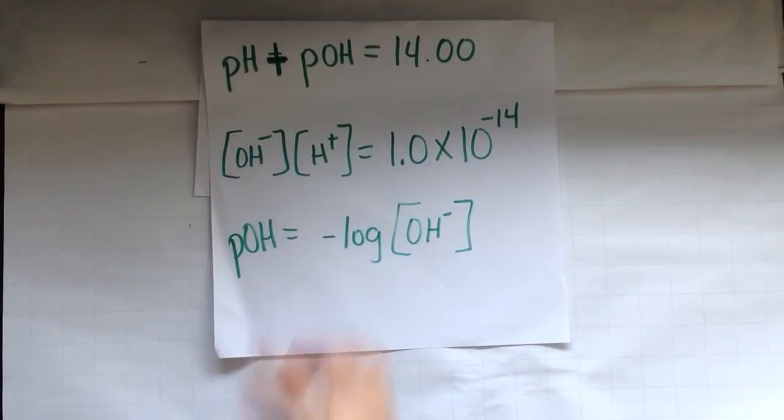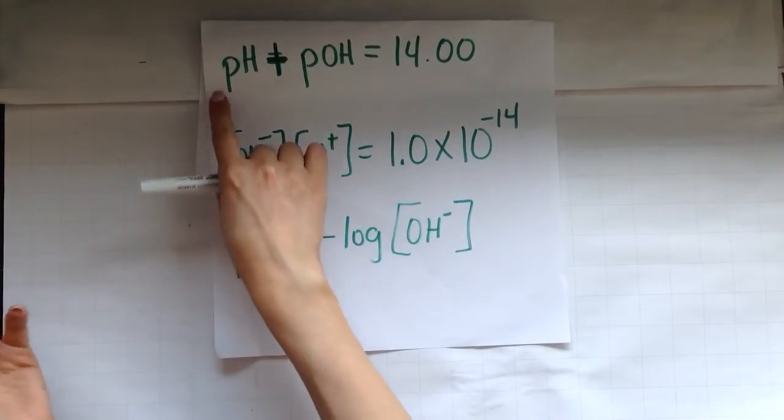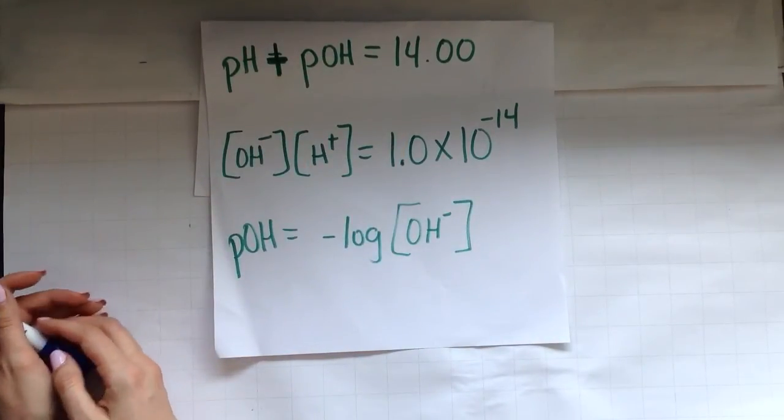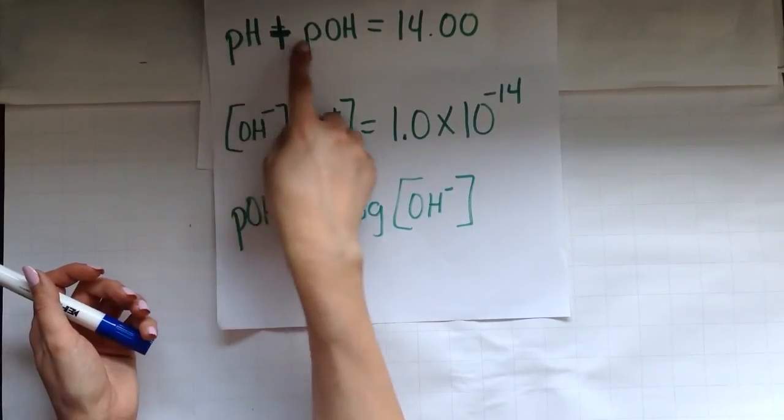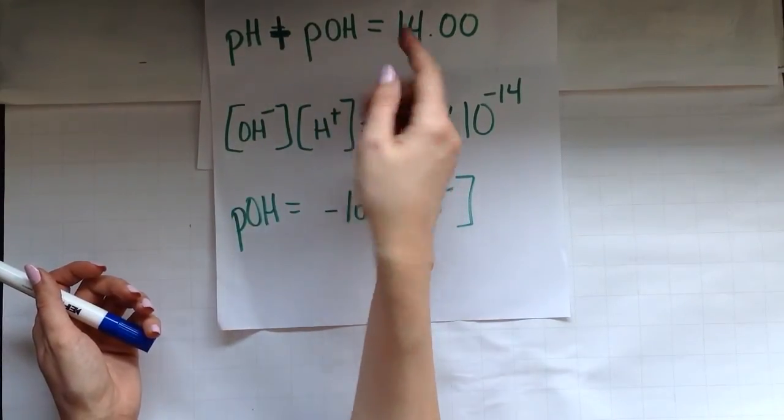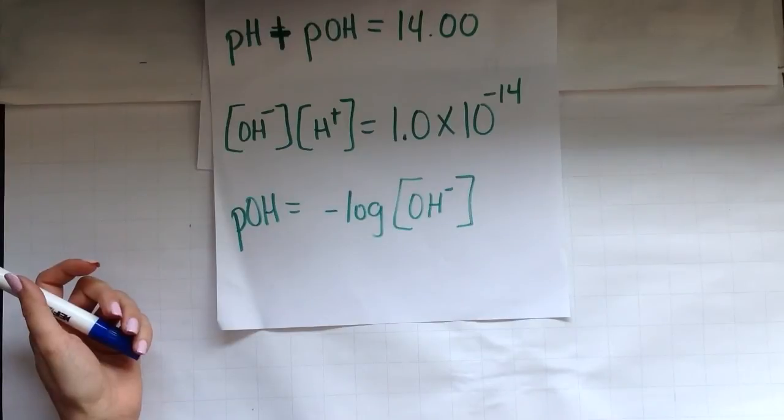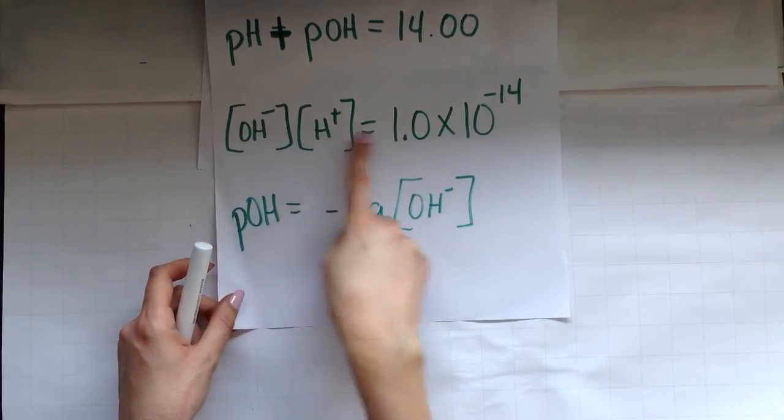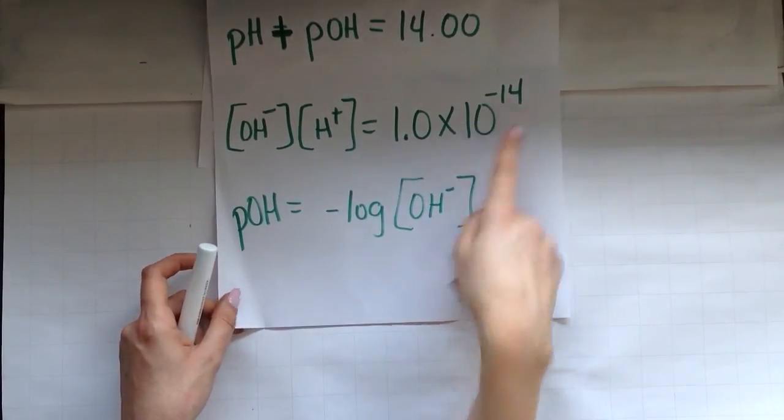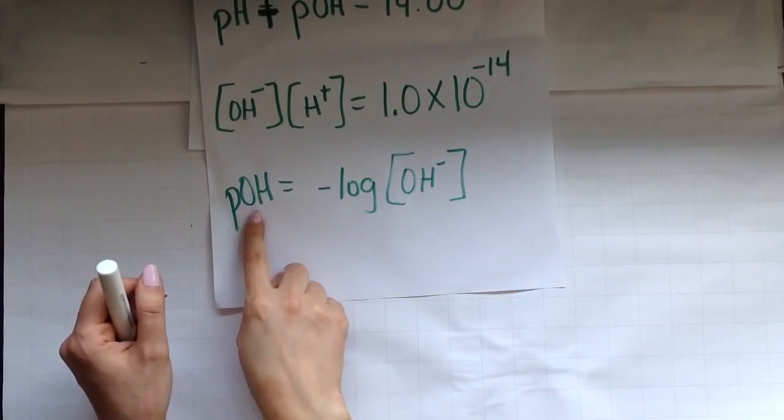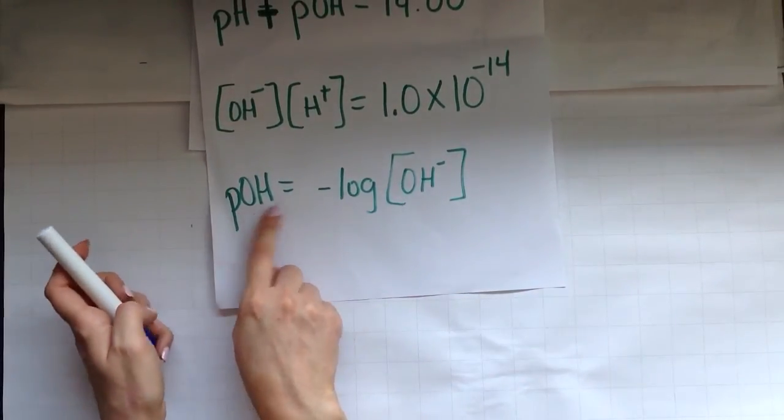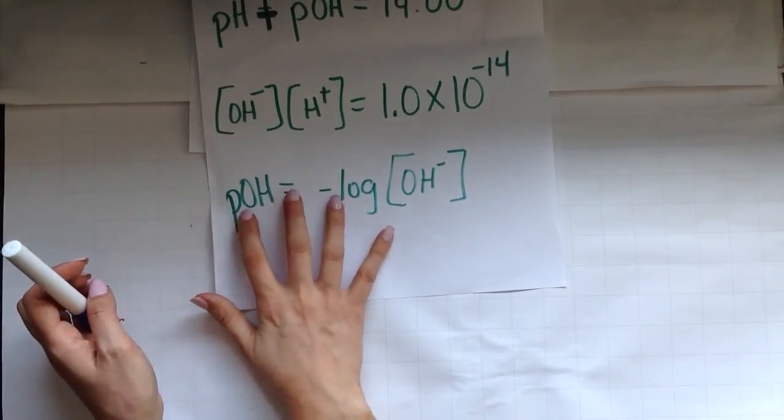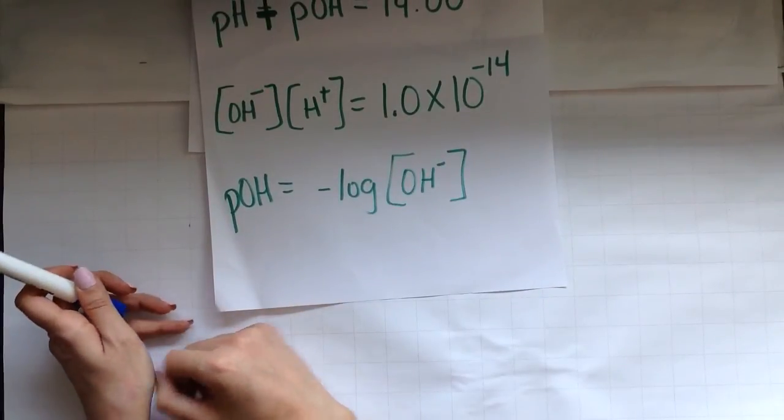So just like we have pH, we can have something called pOH. Well, and you probably guessed it. P is the measure of the H plus concentration. pOH measures the OH concentration. So I can have pH plus pOH and they should equal 14, which is the total on the pH scale. I can also do this. My OH concentration times my H plus concentration should always equal 1.0 times 10 to the negative 14. And just like we had pH equals negative log of H plus, we have pOH equals the negative log of the OH ions. This measures the concentration of OH ions, which is the ion associated with our base.